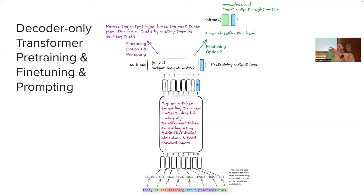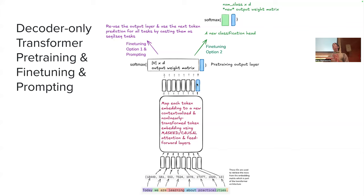There is a confusion to clarify: masked attention has nothing to do with predicting masked tokens. The pre-training objective of predicting the masked token — masked language modeling — is used with encoder-only transformers and is a pre-training objective. Masked attention is a type of self-attention where you are forbidden to look at future tokens. The way we do that is by calculating the self-attention matrix and putting everything above the diagonal to minus infinity, then applying softmax so everything above is zeroed out. Just because the word 'mask' appears in both concepts, don't put them together — they are completely different.